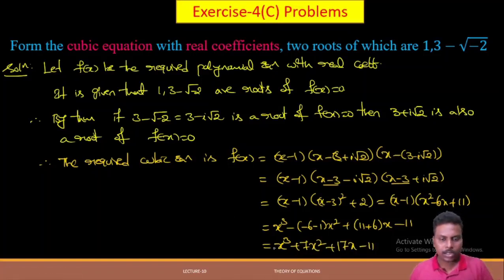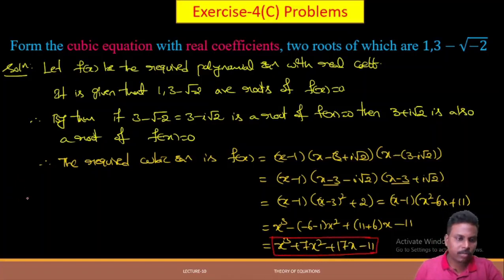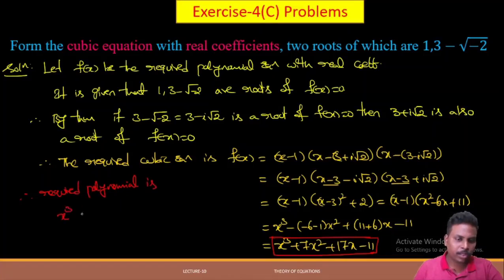So the required polynomial equation is x³ − 7x² + 17x − 11 = 0.